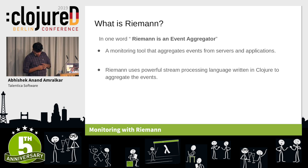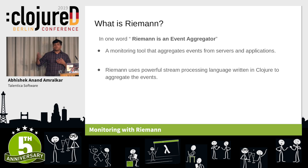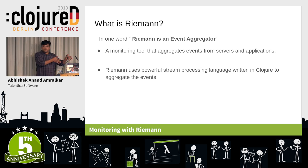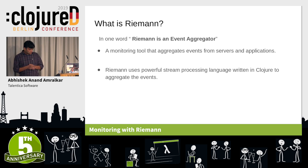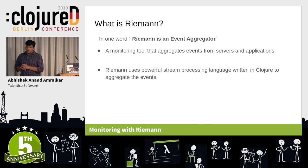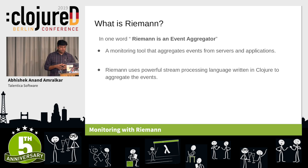Here comes Riemann. When we were looking for a monitoring system, we evaluated many monitoring tools, but our infrastructure was partially in Clojure. So we thought, why not give Riemann a try? We are very happy to know about Riemann. Basically, Riemann is an event aggregator — a tool written by Kyle Kingsbury, who goes by the name Aphyr.